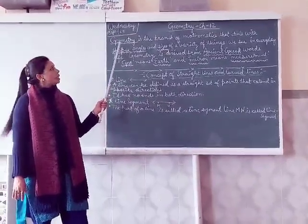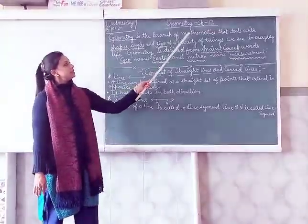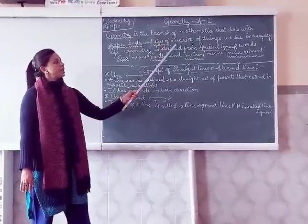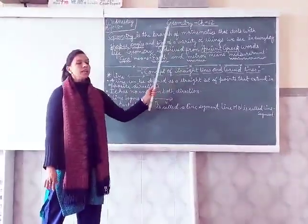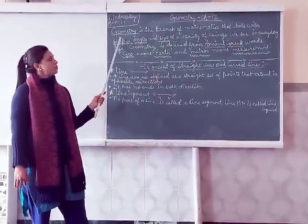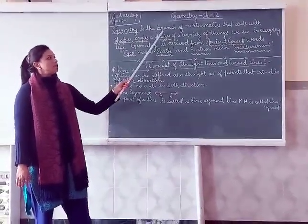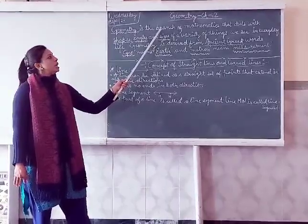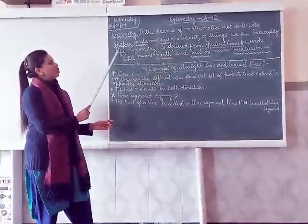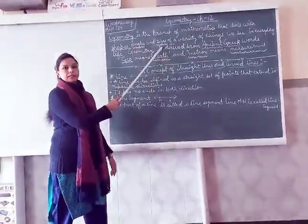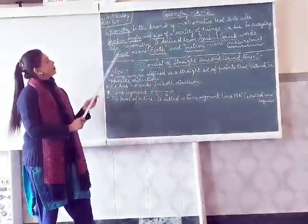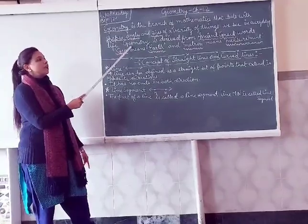What is geometry? Geometry is the branch of mathematics that deals with shapes, angles, and sizes of a variety of things we see in everyday life. In simple words, geometry is a type of mathematics which is about shapes, angles, and sizes of things we see in our daily life.